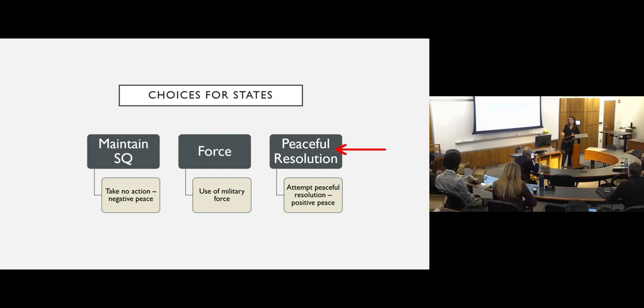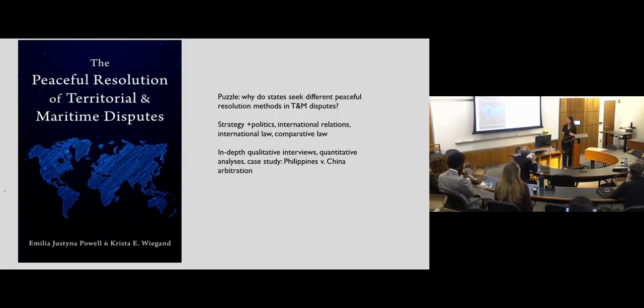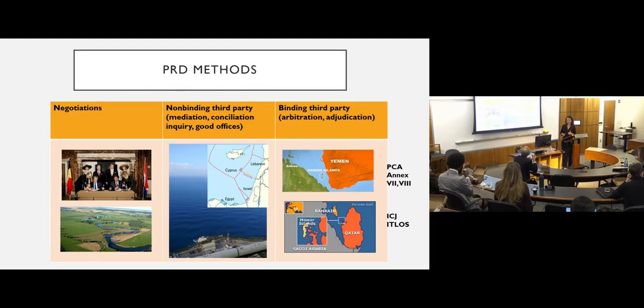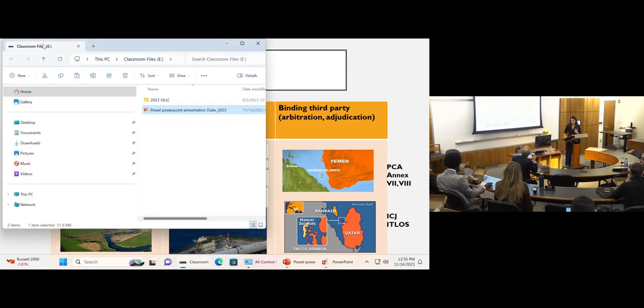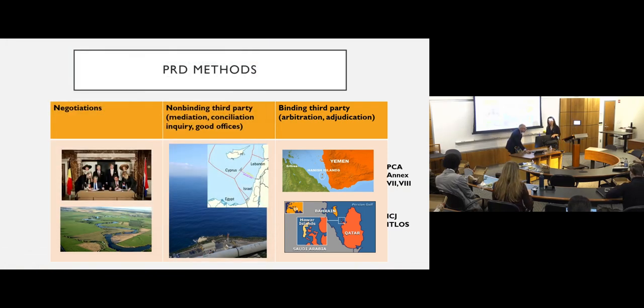And then finally, states can say, okay, let's do something about this dispute. And this is what that book is about. It's about peaceful resolution. So states attempt different things. And when states decide to engage in peaceful resolution, they have to say, well, now that we've decided that we're going to go the peaceful route, which peaceful route are we taking? And that's our research question.